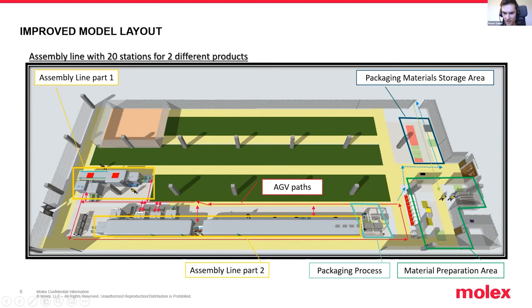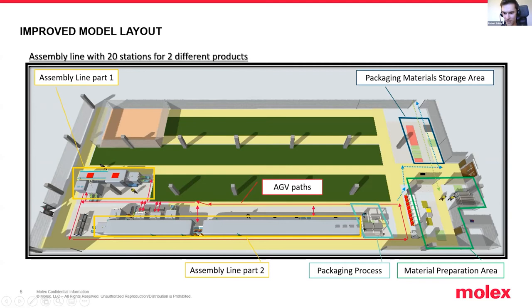This process originally was completed by operators, and now you can see with red color we have AGV paths instead. We have the packaging process at the end of the assembly line. After material is loaded to assembly line one, it can be transferred to assembly line two, depending on the product. Some products may need to be loaded to assembly line two directly, depending on where the raw components are required. As you can see, the paths enter and exit certain stations, meaning specific components are required at certain stations only and need to be transferred on time.